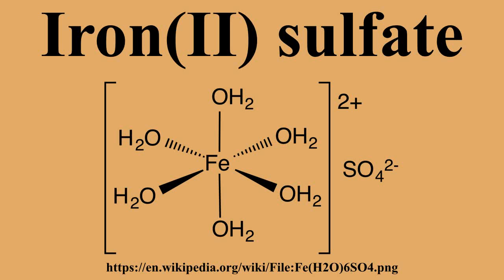Sometimes it is included in canned black olives as an artificial colorant. Ferrous sulfate can also be used to stain concrete, and some limestones and sandstones a yellowish-rust color. Woodworkers use ferrous sulfate solutions to color maple wood a silvery hue.